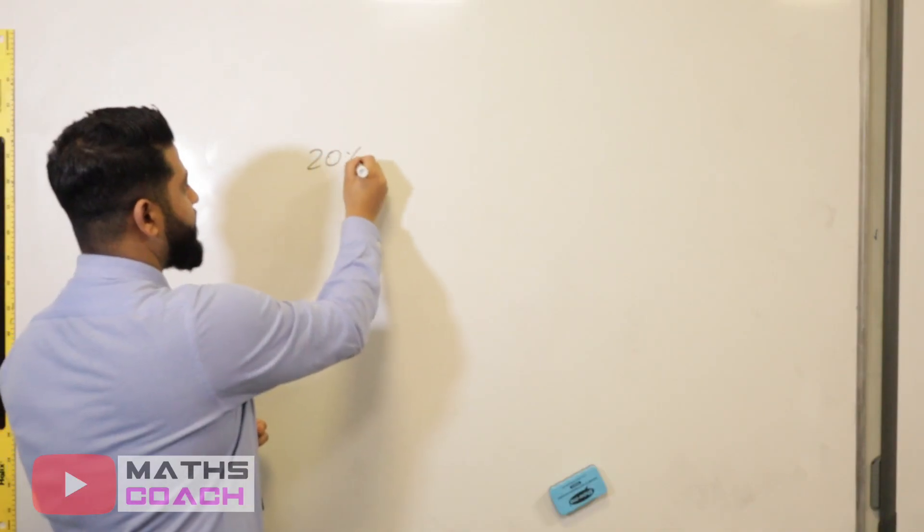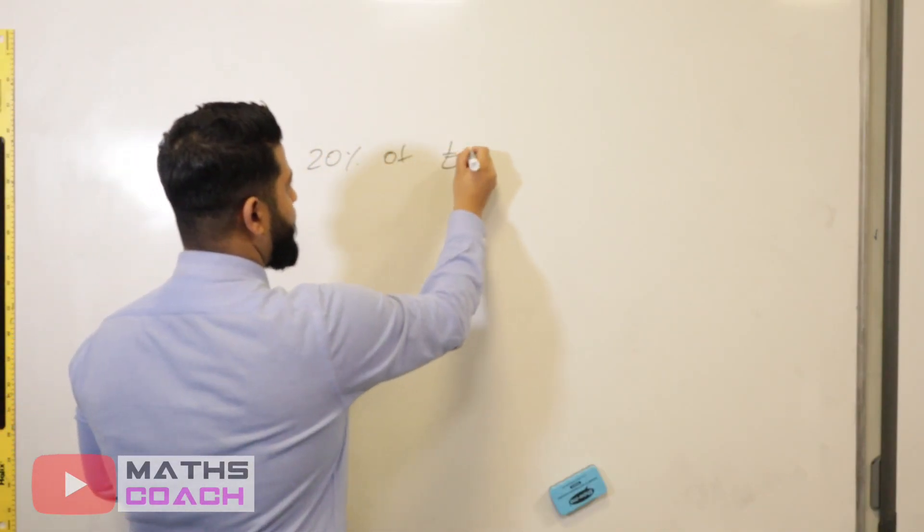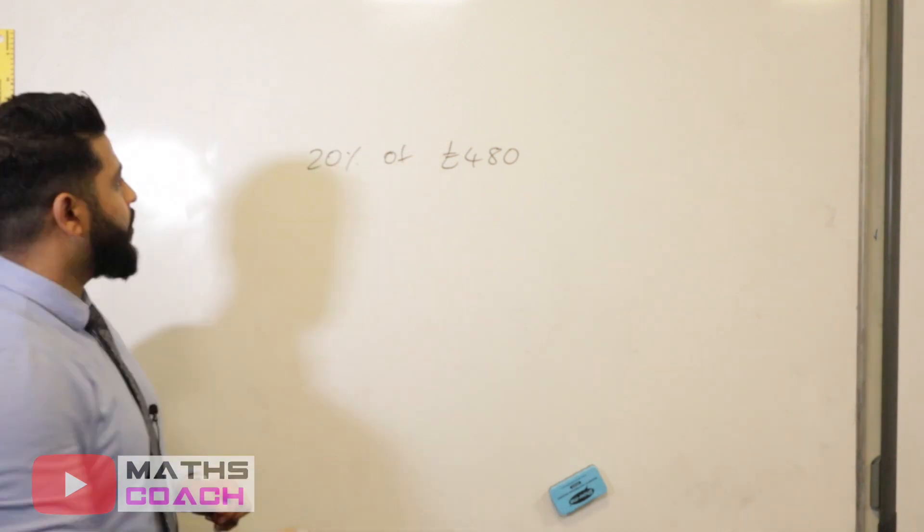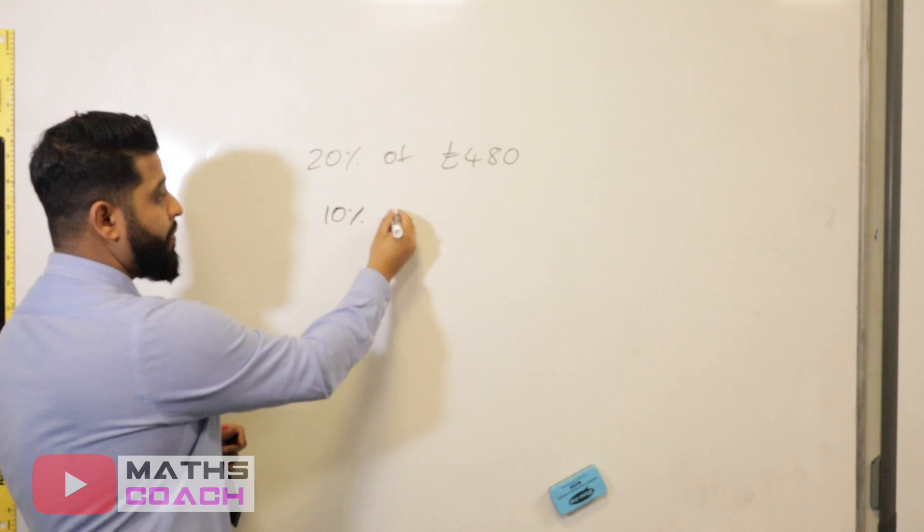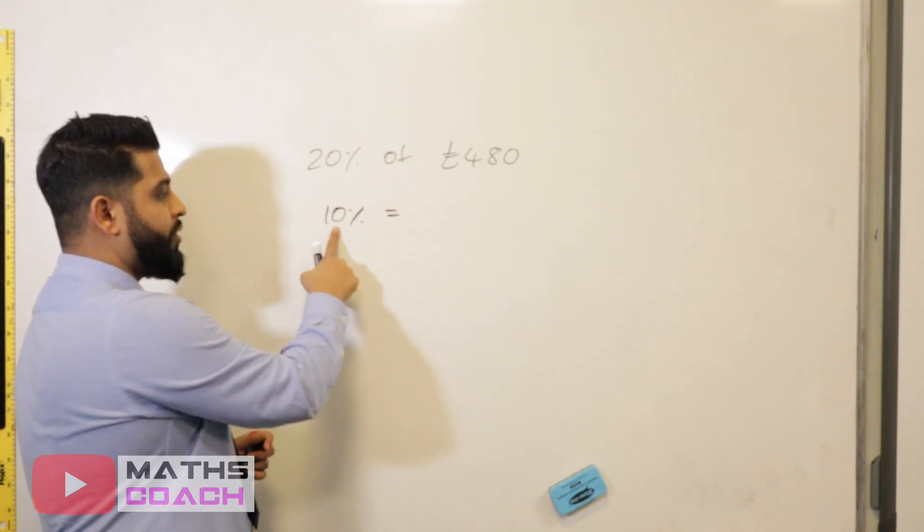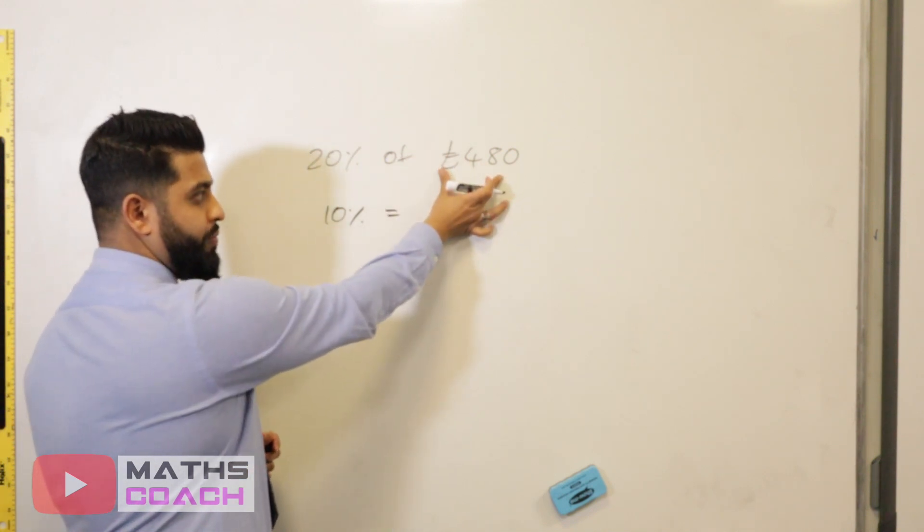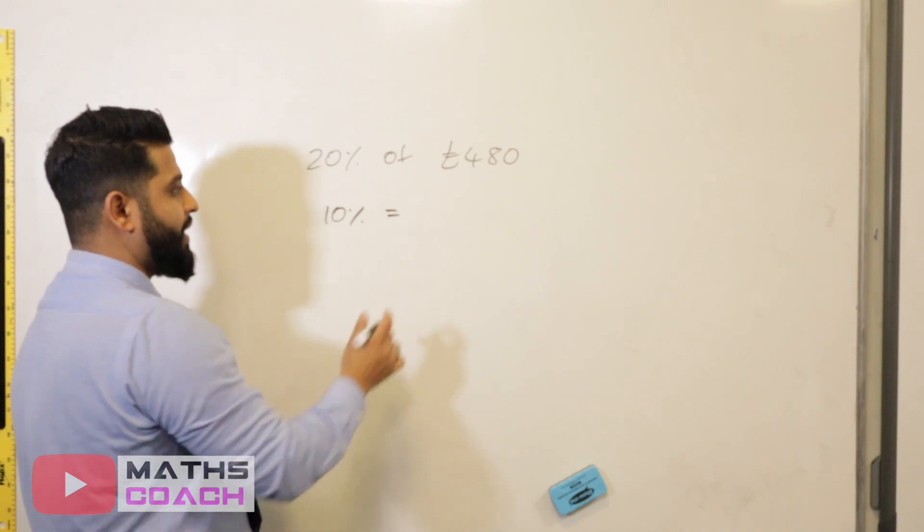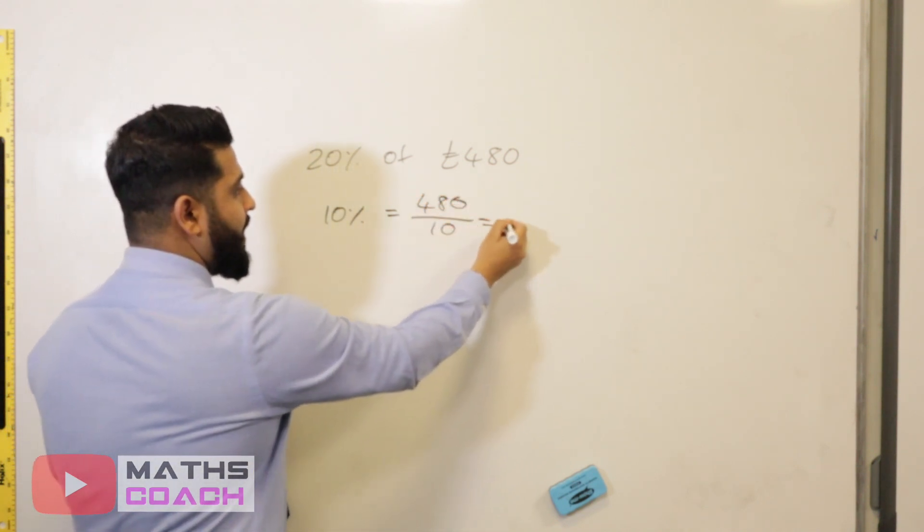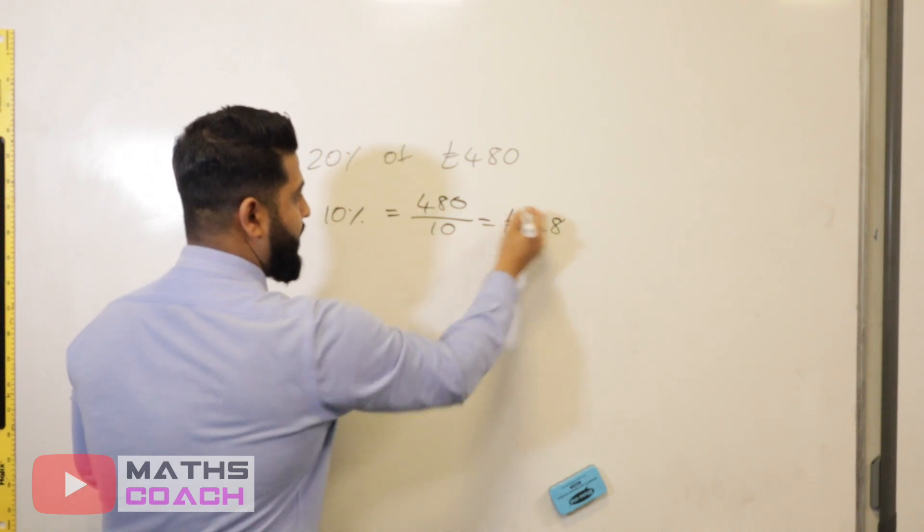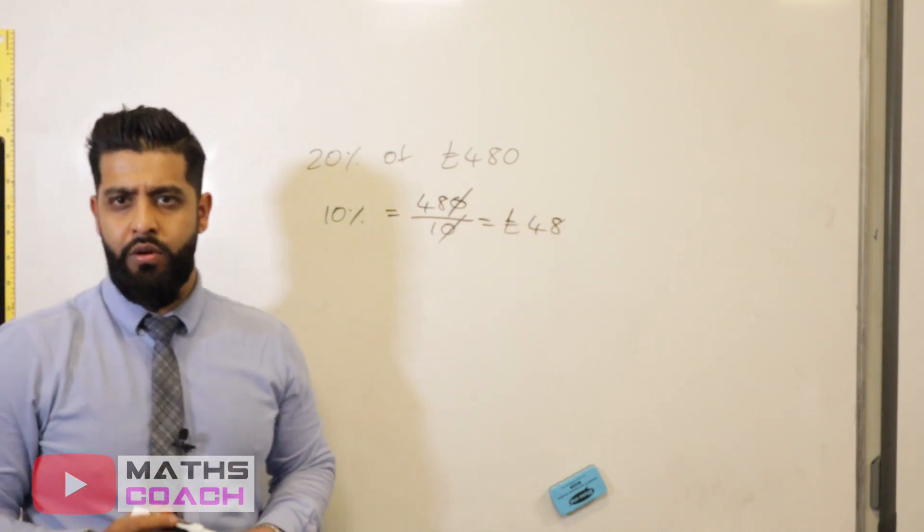We want to find 20% of 480 pounds. So the first thing we want to do is find out what 10% of 480 pounds is. Now if you remember, to find 10%, you take the original amount, which is the 100% amount, and you divide by 10. So we do 480 divided by 10, and that gives us 48 pounds. How we do that is just canceling out those two zeros.